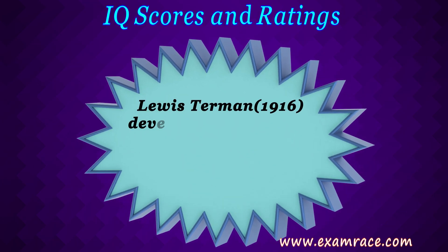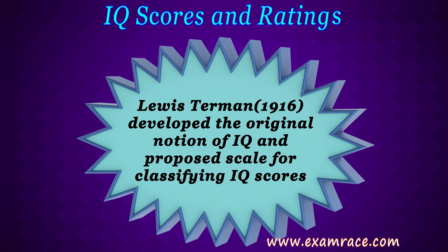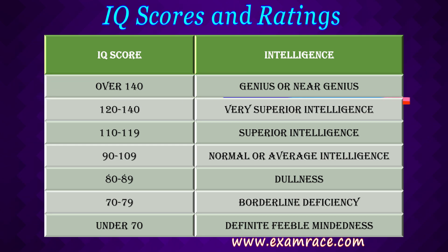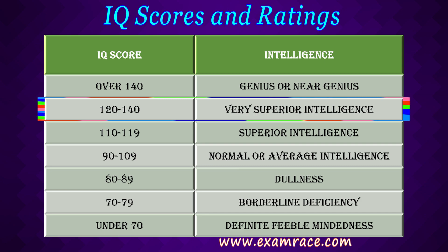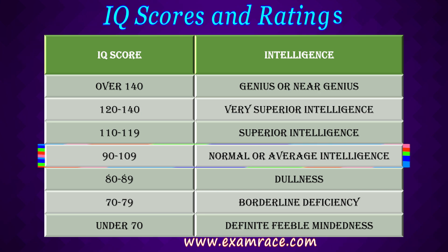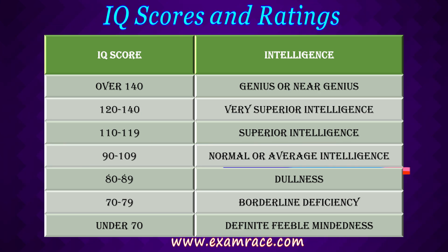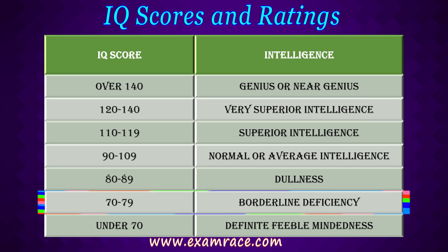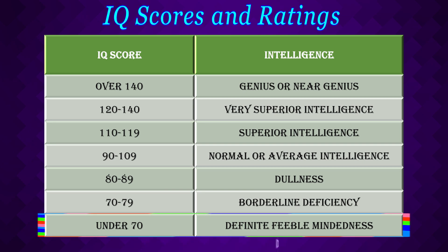Now let us see what IQ scores and ratings are. Lewis Terman in 1916 developed the original notion of IQ and proposed this scale for classifying IQ scores: over 140 — genius or near genius; 120 to 140 — very superior intelligence; 110 to 119 — superior intelligence; 90 to 109 — normal or average intelligence; 80 to 89 — dullness; 70 to 79 — borderline deficiency; under 70 — definite feeble-mindedness.